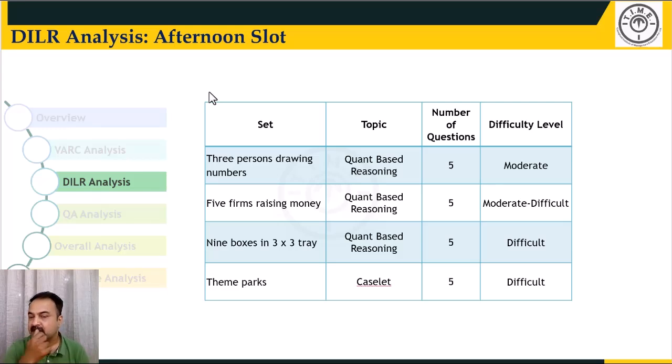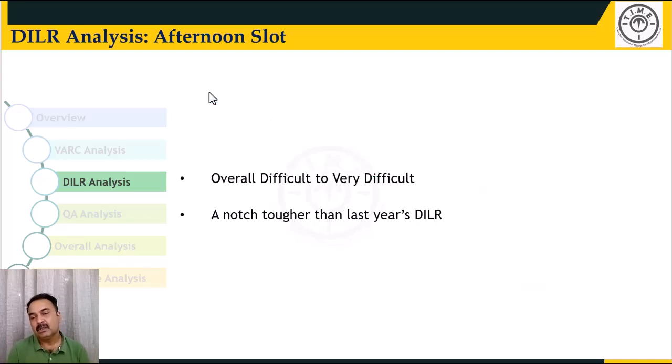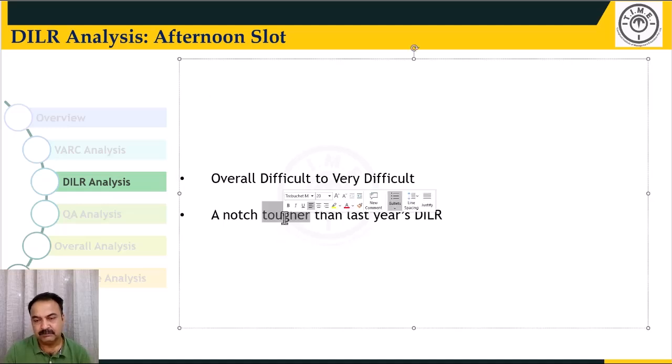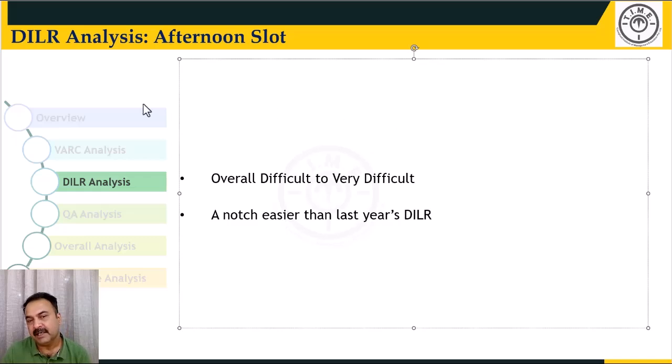The theme parks caselet, the five firms raising money, or the three persons drawing numbers, three caselets are moderate, moderate to difficult. If you do even two of them it would be a fantastic score. If you do only one caselet it would not be a fantastic score. So overall this is not very difficult category DILR like last year. This is difficult to very difficult. And this is one notch easier than last year's DILR.